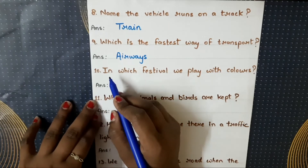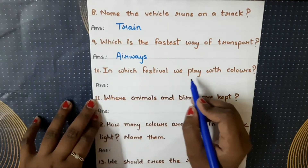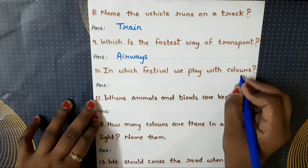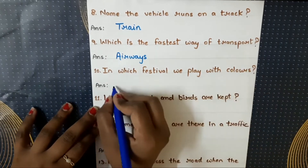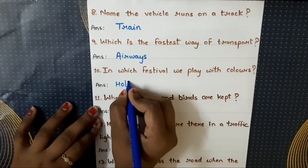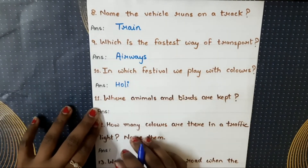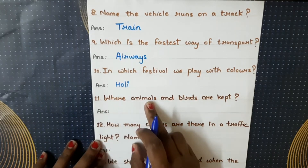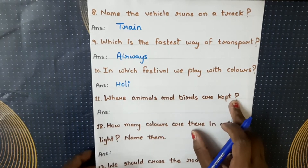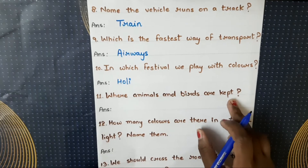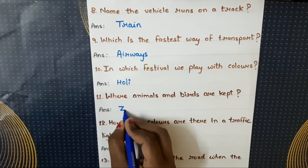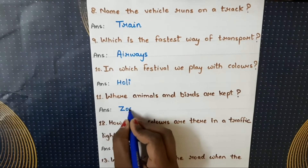Next question: in which festival do we play with colors? Kaunse festival mein hum colors ke saath khelte hain? Answer is Holi. Where are animals and birds kept? Animal aur birds ko kahan rakhte hain? Answer is zoo.